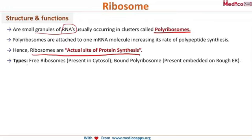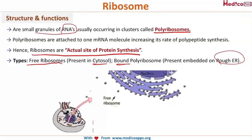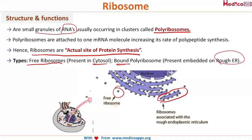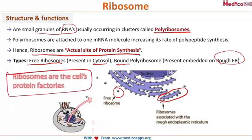The first type is the free ribosomes, which are present in the cytoplasm. The second type is bound ribosomes, which are present on the rough endoplasmic reticulum. Free ribosomes are not always confined to the rough endoplasmic reticulum — they are also present in the cytoplasm and are not attached to it. From this, you can conclude that ribosomes are the protein factories of the cells.